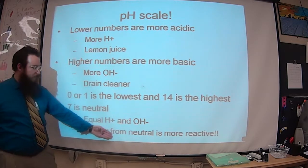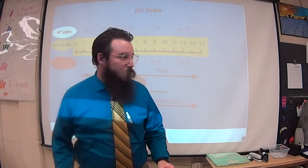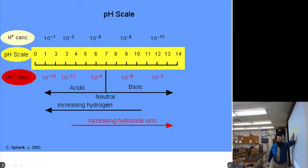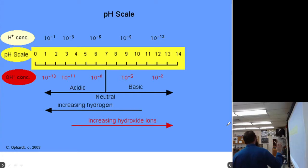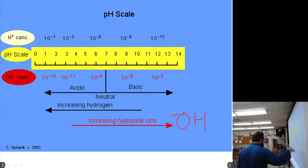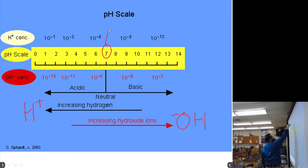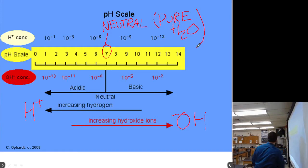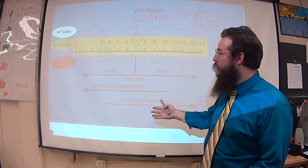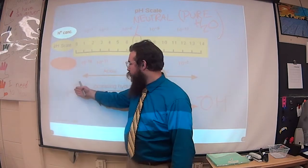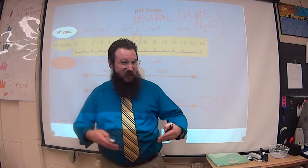The further out from neutral you get — to either side — the more reactive you are. On your pH scale, make sure you label everything: over on the basic side we have more OH⁻, and over on the acidic side we have more H⁺. Remember, each step is ten times. As you move up you've got more hydroxide — OH⁻ — and as you move down you've got more H⁺. Seven is neutral, which means we could have pure water, though a neutral pH doesn't necessarily mean it's definitely pure water — there could still be other substances in it that just don't have a pH. So if you have a neutral substance, that doesn't mean just drink it — it could still be dangerous.